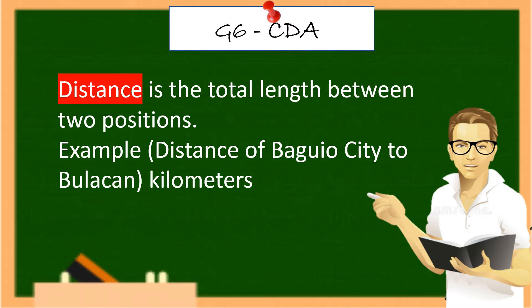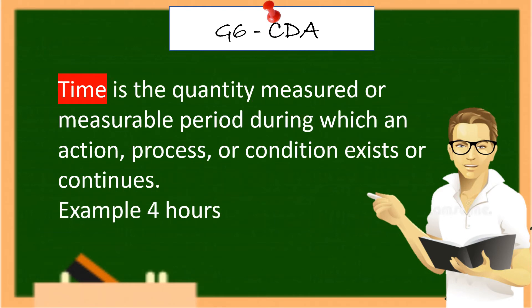Distance is the total length between two positions. Example, distance of Baguio City to Bulacan, kilometers. Time is the quantity measured or measurable period during which an action, process, or condition exists, or continues. Example, 4 hours.